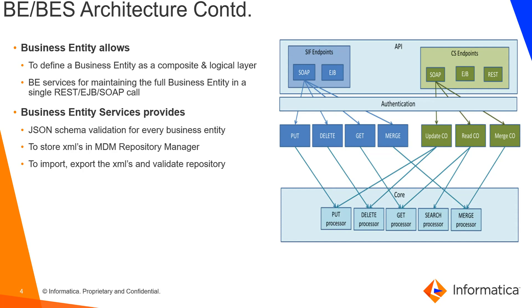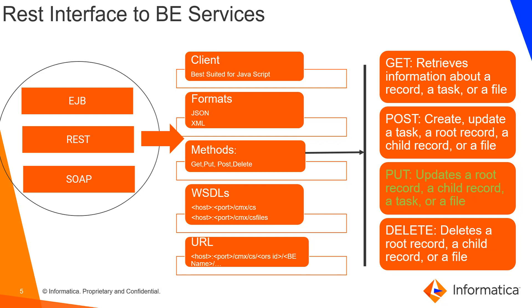The next slide covers the REST interface to BE services. On the left side we have EJB, REST, and SOAP interfaces. The client can be JavaScript-based, and formats must be either JSON or XML. For REST calls, the methods allowed are GET, PUT, POST, and DELETE. The WADL file is available from the URL: CMX/CS along with the host name and port. The URL for updating a business entity follows the pattern: host, port, CMX/CS, ORS ID (the data source ID), business entity name, and optionally a view object for searching.